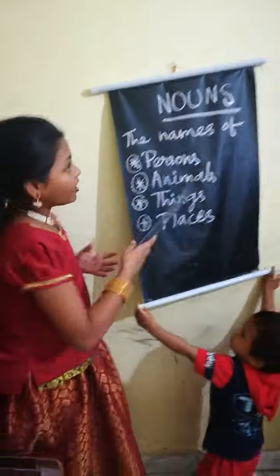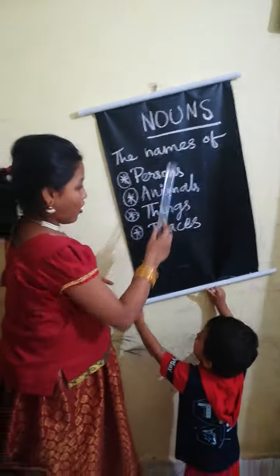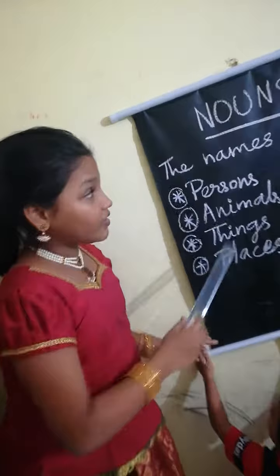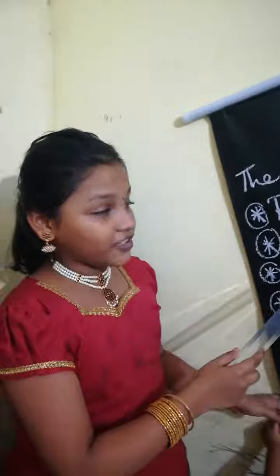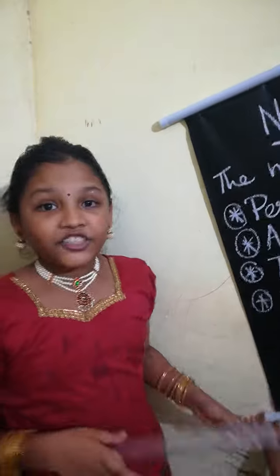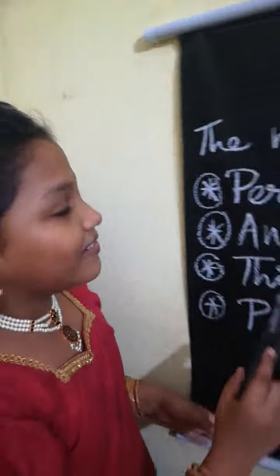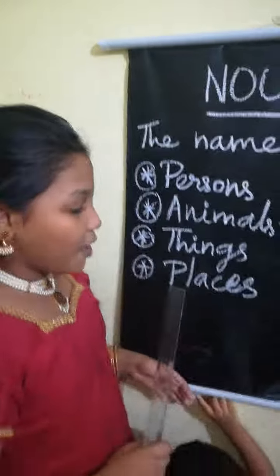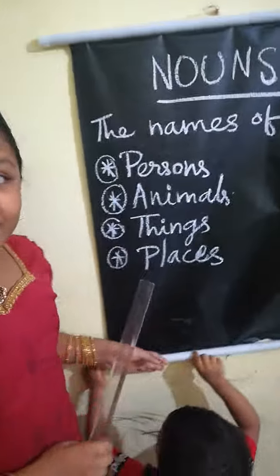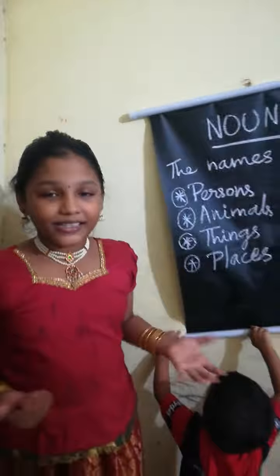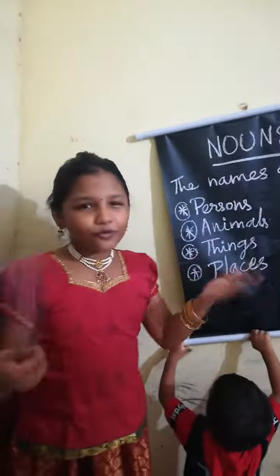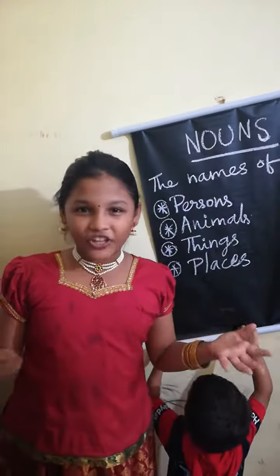The names of things are Chair, Bureau, Table, etc. The names of places are Delhi, Mumbai, China, etc.